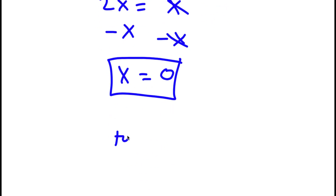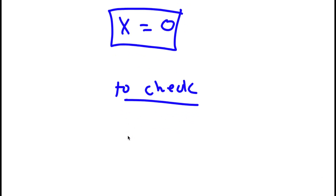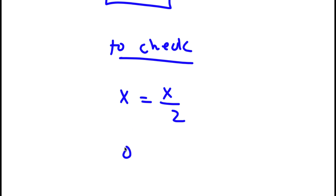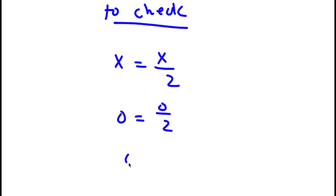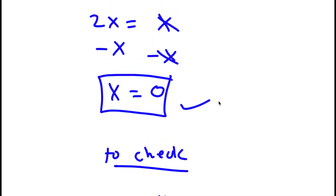Now to check, I have x is equal to x over 2. We know that x equals 0. So I have 0 is equal to 0 over 2. 0 divided by 2 is 0, so I have 0 equals 0. And because this is right, my solution is right.